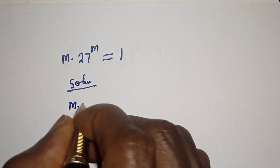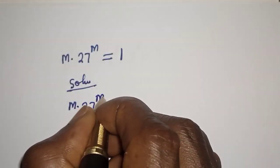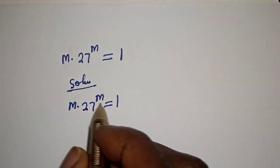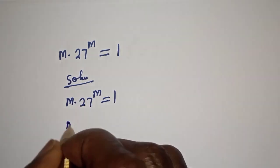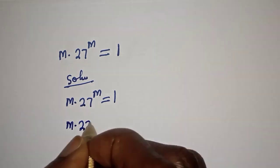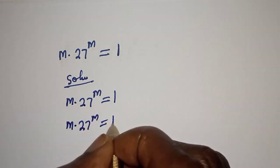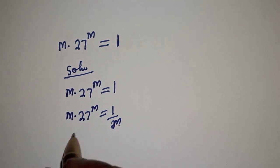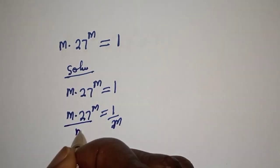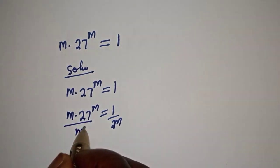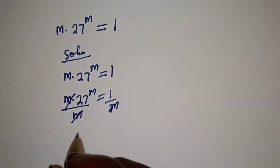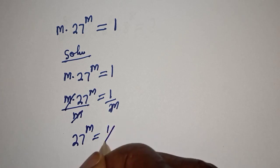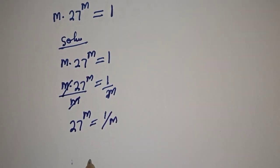m multiplied by 27 raised to power m is equal to 1. Let's divide both sides of this equation by m. This gives us 27 raised to power m is equal to 1 over m.